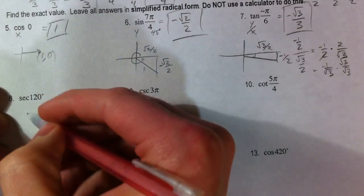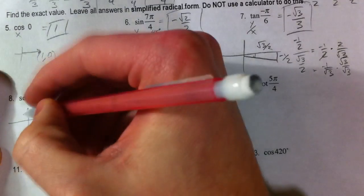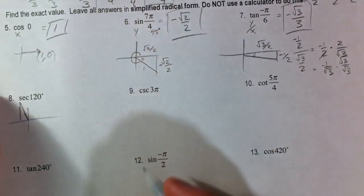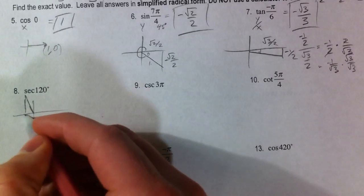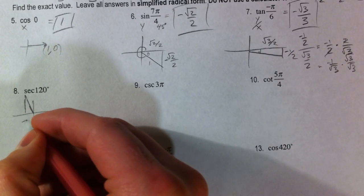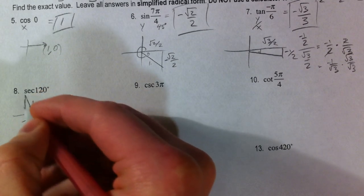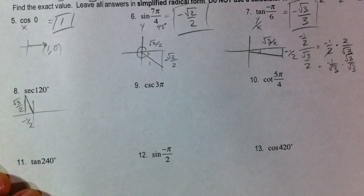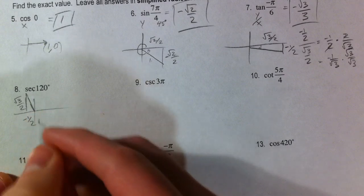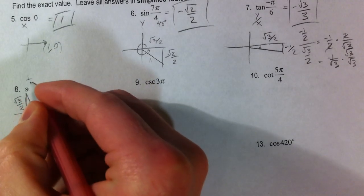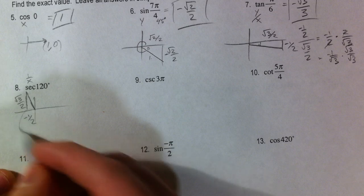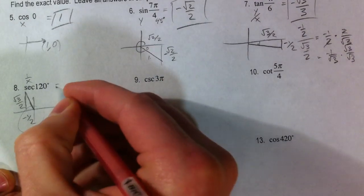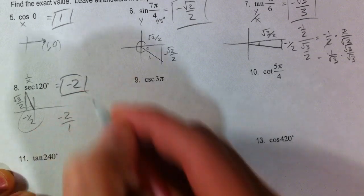So, secant of 120. Draw your 120 degree angle. You're going up like this. Sort of overemphasize it. So, the short side is negative 1 half, and the long side is root 3 over 2. Again, with those 1 halves and root 3 over 2. Secant is the reciprocal of the cosine, which is the x. So, I'm going to look at my x value and just flip it right over. Negative 2 over 1, or negative 2.